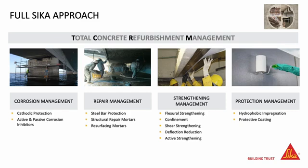When dealing with damages due to corrosion, a full system approach is needed in order to repair the structure to its original state and to improve its durability. Depending on each situation, various systems of mitigation can be offered to the market, from basic repair management, protective coatings, and strengthening when required, to corrosion management itself using either cathodic protection or corrosion inhibitor technologies. In the rest of the video, more information will be given on inhibitor technologies.